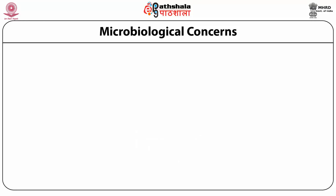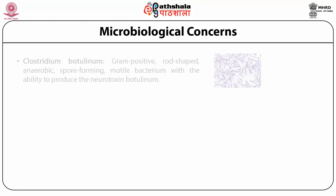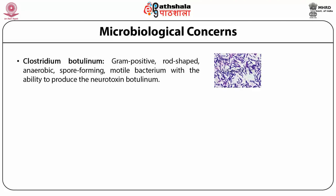Among microbiological concerns, various microorganisms lead to foodborne diseases. First is Clostridium botulinum — a gram-positive, rod-shaped, anaerobic, spore-forming, motile bacteria with the ability to produce the neurotoxin botulinum. As shown in the picture, they appear purple after gram staining. Next is Salmonella, another bacteria causing foodborne disease, carried in the intestinal tract.